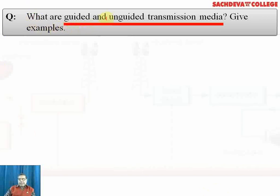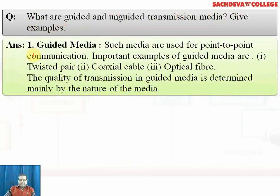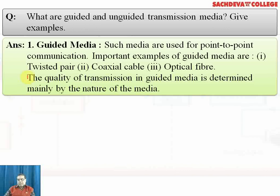Guided and unguided transmissions: guided media are used for point-to-point communication. Important examples of guided media are twisted pair cable, coaxial cable (cables sharing a common axis), and optical fiber. Optical fiber uses a different outer and inner coating and operates on the principle of total internal reflection.